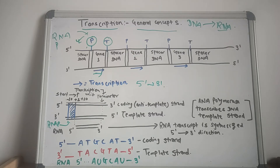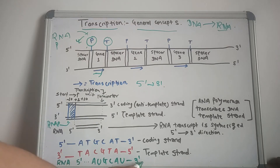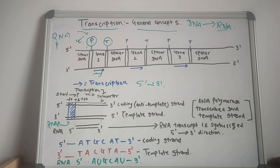In transcription, no primer is required. The RNA polymerase moves along the template strand in the three prime to five prime direction and synthesizes the RNA product in the five prime to three prime direction, using ATP, GTP, CTP, and UTP as substrates. RNA polymerase does not proofread its work. The RNA product is complementary and antiparallel to the template strand.